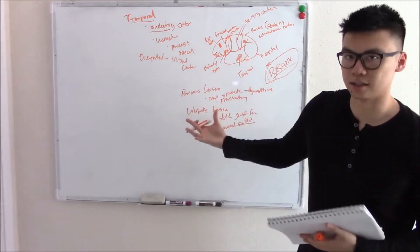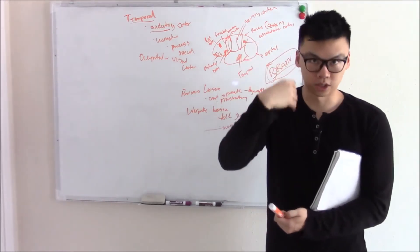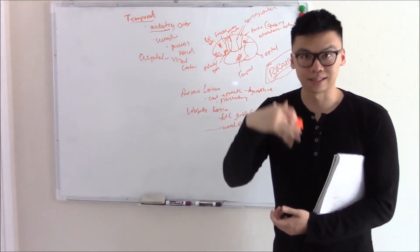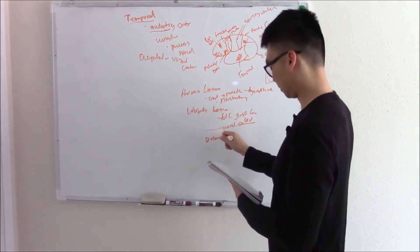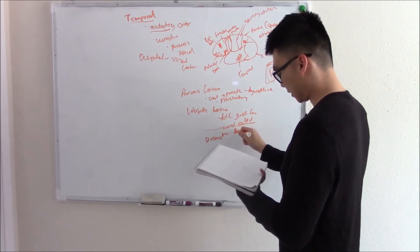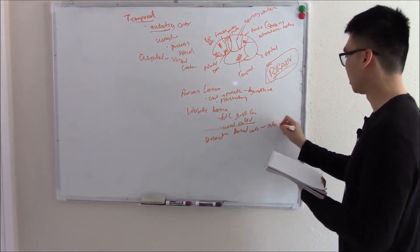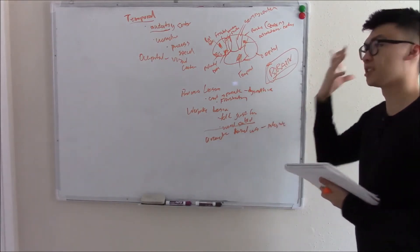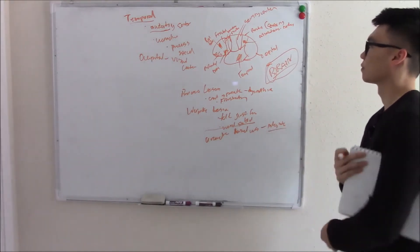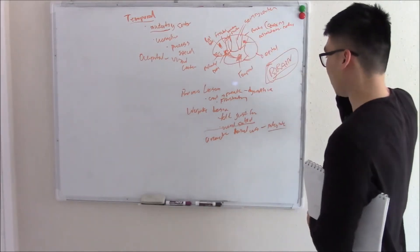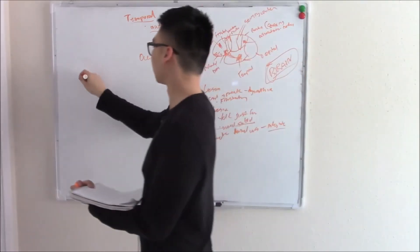There has to be something that connects your comprehension of speech and your motor speech so you can understand what someone says and respond. The thing that connects the two is your arcuate fasciculus, which helps integrate both the comprehension part and the motor part.